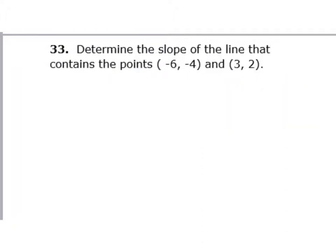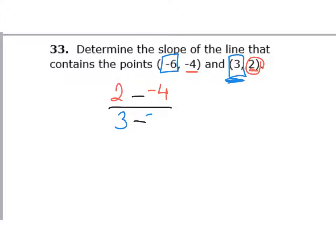Number 33 is the same type of problem. I'll set it up with the Y values first — starting with the second point: 2 and negative 4 — and then the X values: 3 and negative 6, starting with the second one first. You can change both to positives or type it directly in the calculator. The answer is positive 2 thirds.